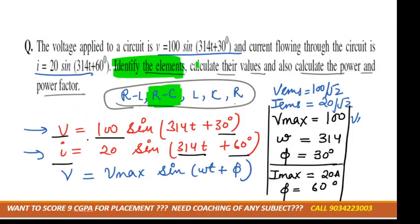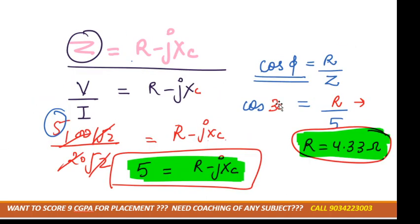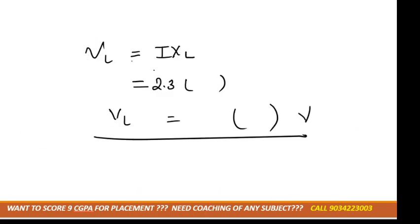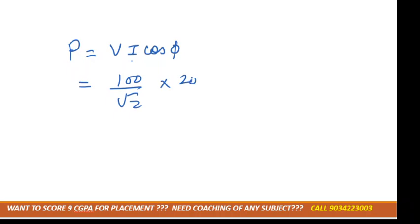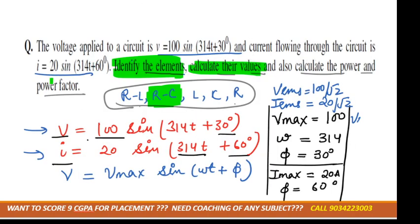We now have C = 127 μF and R = 4.33 Ω. For power: P = VI · cos φ = (100/√2) × (20/√2) × 0.866, which gives the power value. The power factor is cos 30° = 0.866.